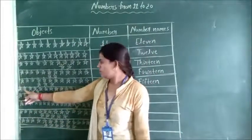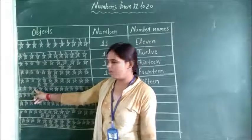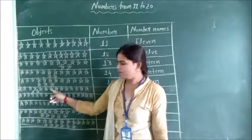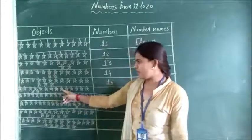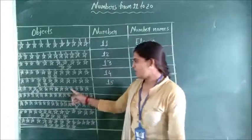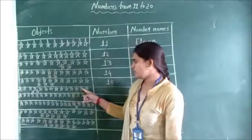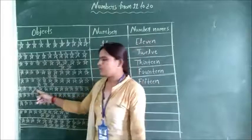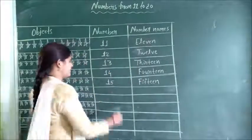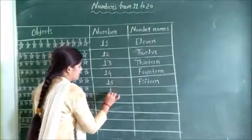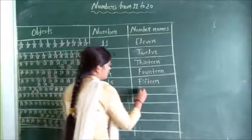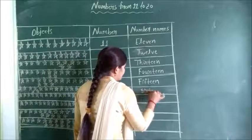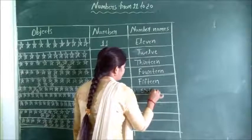Count: 1, 2, 3, 4, 5, 6, 7, 8, 9, 10, 11, 12, 13, 14, 15, 16. Next. Write here: 1, 6 — 16. S, I, X, T, E, E, N. Sixteen. 16. Next.